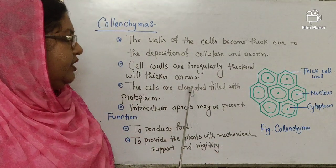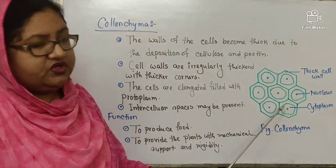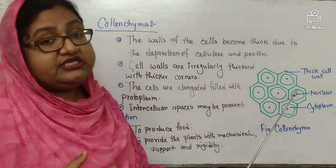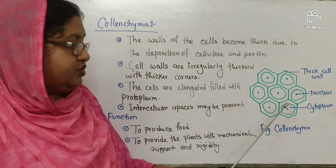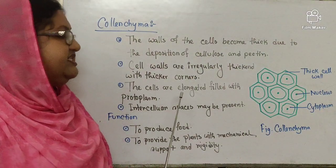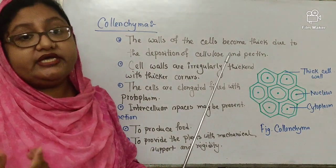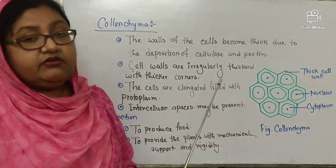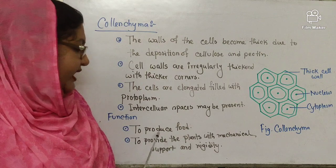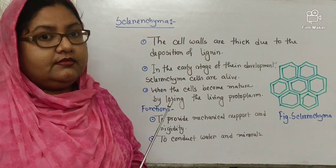The cells are elongated and filled with protoplasm — the combination of cytoplasm and nucleus is collectively known as protoplasm. In collenchyma, protoplasm is present. Intercellular spaces may be present; in this diagram intercellular space is not shown, but in collenchyma it may be present. The function: to produce food and to provide plants with mechanical support and resistance.